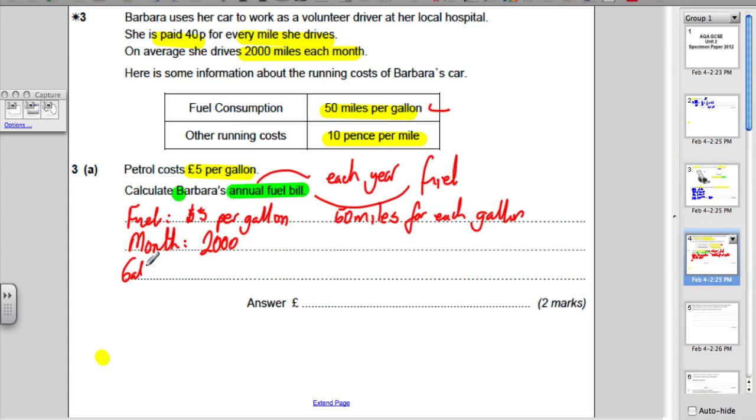So, gallons per month, well, that must be how many miles she travels, 2,000, divided by the fact that for each gallon, she gets 50 miles. So, divided by 50, and we would get 40 gallons a month. So, her annual fuel bill, then, if she does 40 a month, her annual fuel must cost 40, that's each month how many gallons she uses, multiplied by 12, multiplied by £5 per gallon.